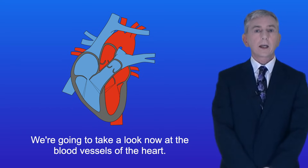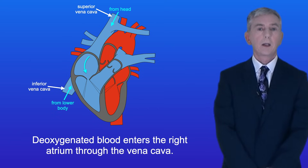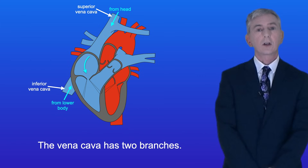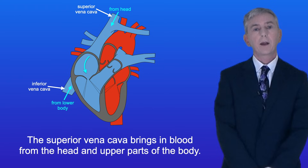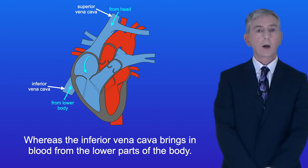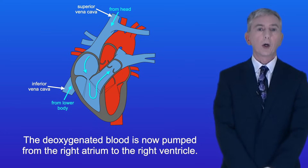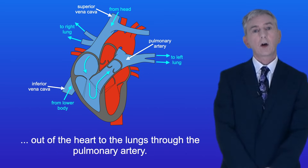Deoxygenated blood enters the right atrium through the vena cava. The vena cava has two branches: the superior vena cava brings in blood from the head and upper parts of the body, whereas the inferior vena cava brings in blood from the lower parts of the body. The deoxygenated blood is then pumped from the right atrium to the right ventricle, which pumps it out of the heart to the lungs through the pulmonary artery.